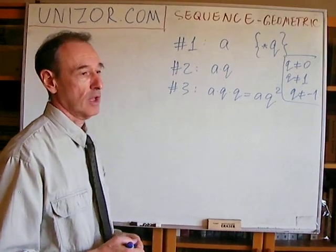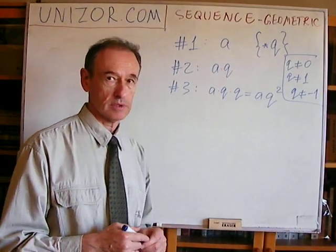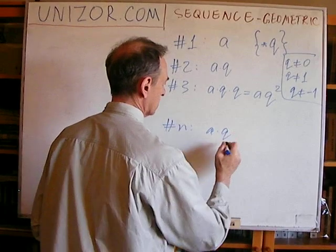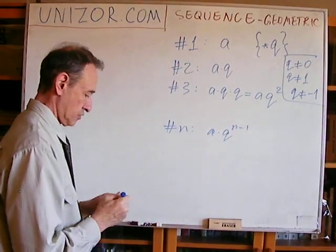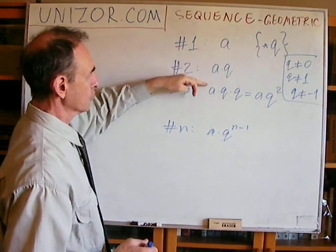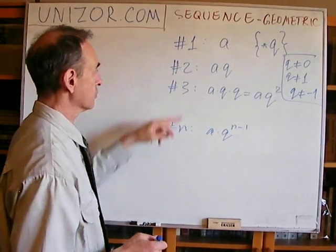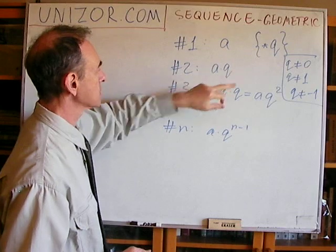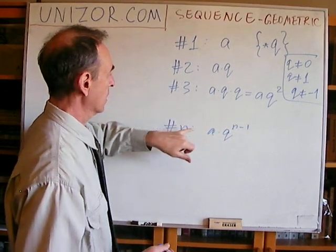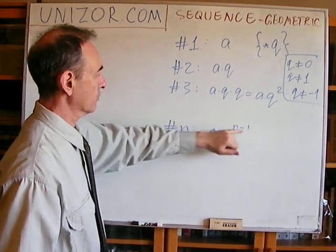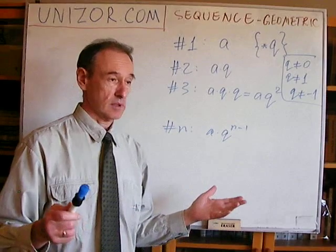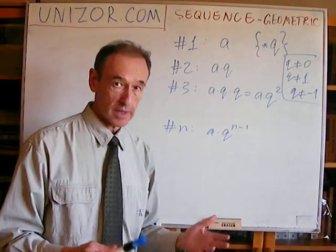Now, let's talk about the nth element of this progression. As you've probably figured out, to reach the nth element, I have to multiply a by q exactly n minus one times. To get element two, I multiply once; to get element three, I multiply a by q two times; and to get element n, I multiply a by q n minus one times. This is the formula. How can we prove it? By induction, obviously.